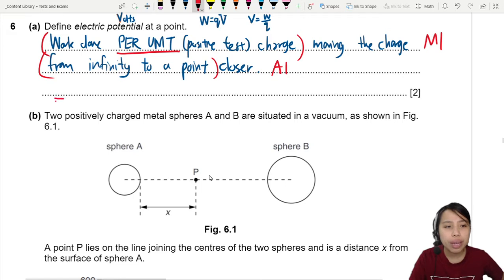So this definition, by the way, is not the same as electric potential energy. If you didn't mention per unit, then it's another thing, it's another definition already. For potential, you must say per unit. This is important.